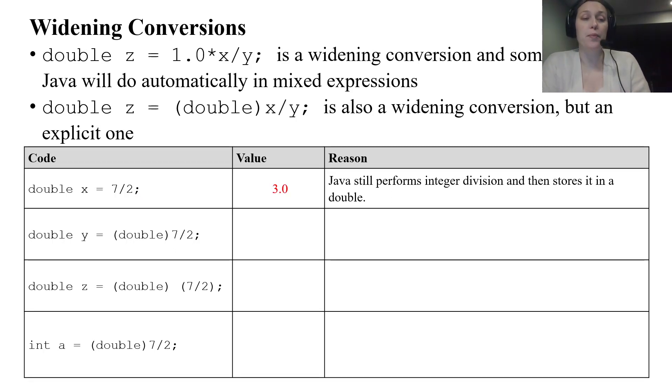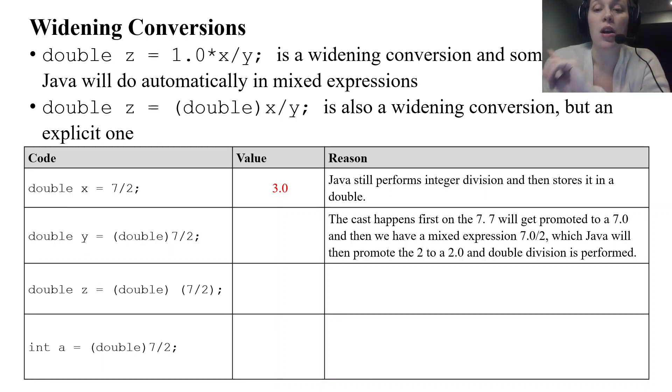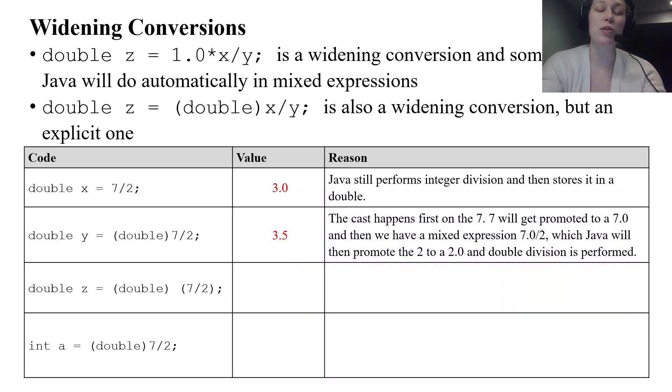Now we have our explicit cast in parentheses right before the 7 divided by 2. So what happens? The cast happens first on the 7. The division does not happen first here. When it's written like this the cast happens on the value that is coming directly behind it. So it happens on the 7. The 7 gets promoted to a 7.0 and then we have a mixed expression 7.0 divided by 2 and that's when Java will promote the 2 to 2.0 and we have double division. So 7 divided by 2 double division gives us 3.5 and then that's stored in Y which is a double.